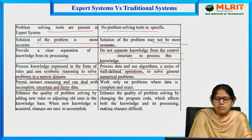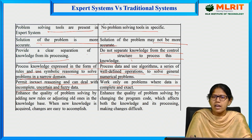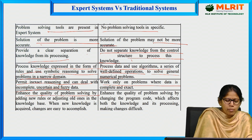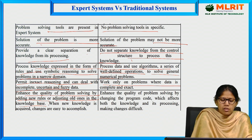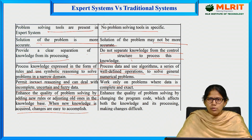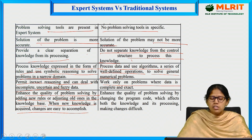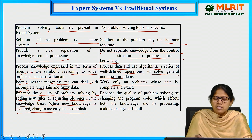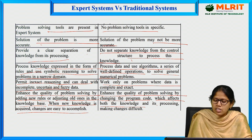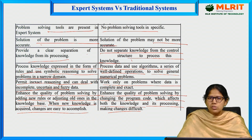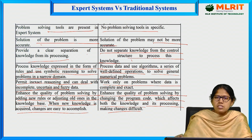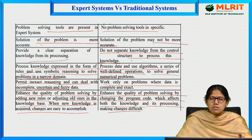Traditional systems work only on problems where data is complete and exact. Regarding improving the quality of problem solving: in expert systems, new rules can be added or old ones adjusted in the knowledge base, making changes easy to accomplish. Traditional systems require changing the program code, which affects both the knowledge and its processing, making changes difficult. These are the differences between expert systems and traditional systems.